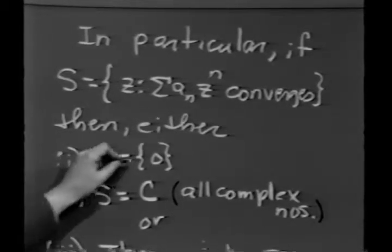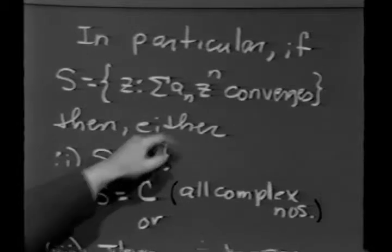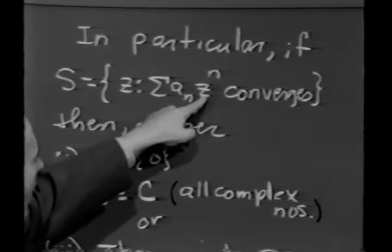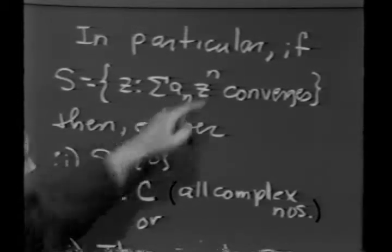Namely, either S consists solely of 0. Obviously, if I replace z by 0, this thing converges. It's identically 0, in fact.